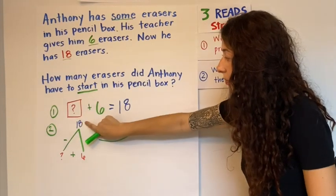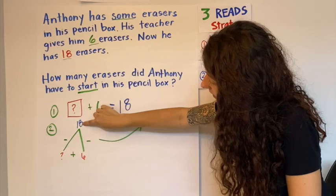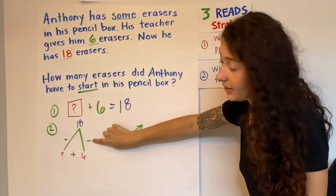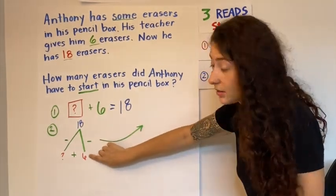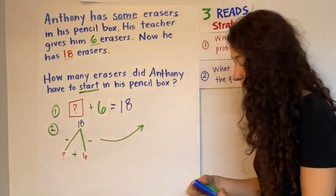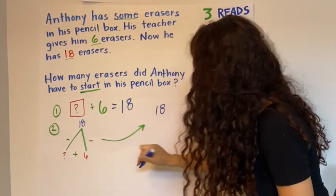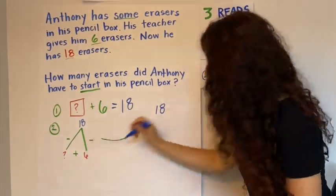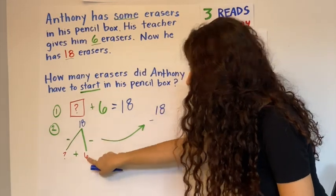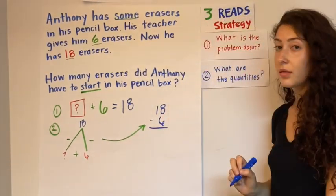What you do, you're going to start at the top and you're going to follow and go down the mountain. So 18 minus six is going to equal your unknown. So I'm going to say that again. 18 minus six is going to give us that unknown.